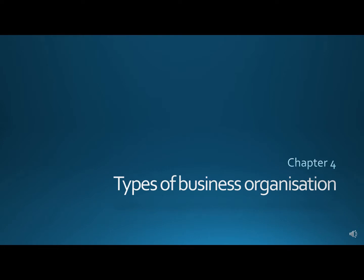Today we're going to cover chapter number four: types of business organization. Previously we covered chapter number three, where we talked about enterprise — entrepreneurs who are risk takers and open up new business organizations, taking on the responsibility of combining the factors of production in order to provide goods and services for the average consumer. So let's move on to the types of business organizations they could go for when setting up their own enterprise.